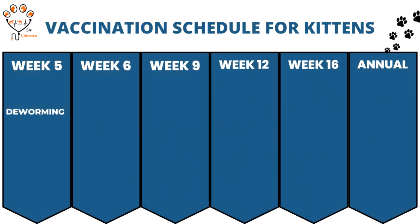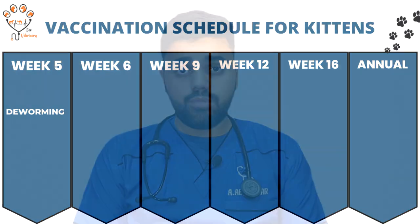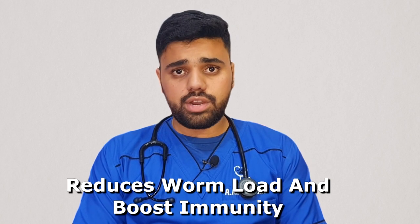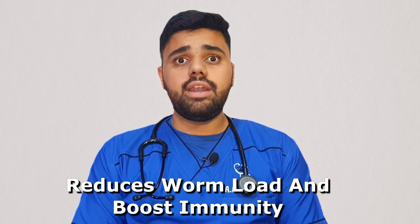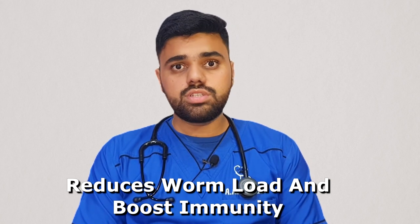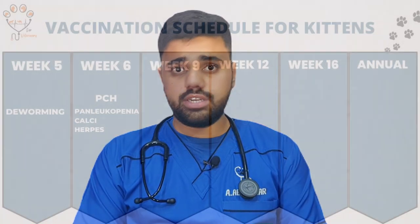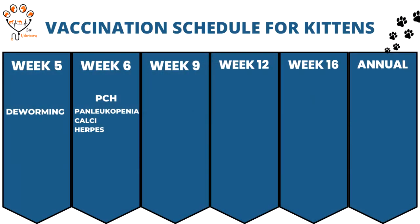On week five, or one week before the first dose of vaccination, deworming is very important, as many worms come from the mother. Deworming reduces the worm load of your cat or kitten and also boosts the immunity so that the immune system can make immunity against that specific disease.